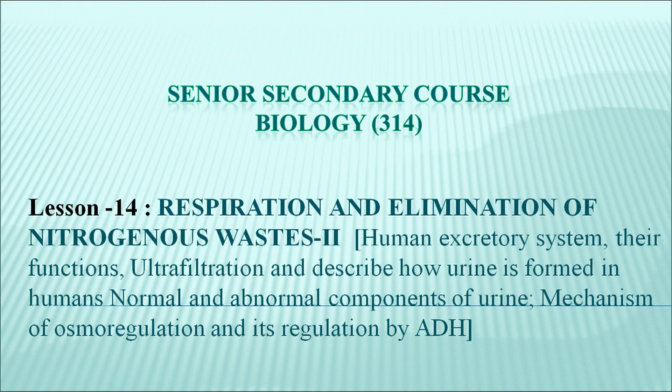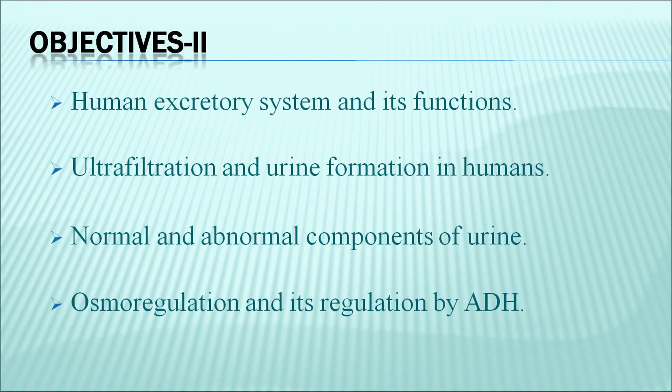In this chapter, we will explore the human excretory system and their functions, ultrafiltration, and describe how urine is formed in humans, the normal and abnormal components of urine, and the mechanism of osmoregulation and its regulation by ADH. The objectives of this part are: human excretory system and its function, ultrafiltration and urine formation in humans, normal and abnormal components of urine, and osmoregulation and its regulation by ADH.